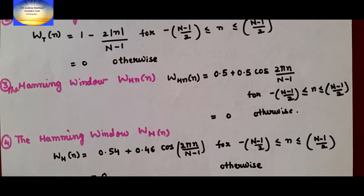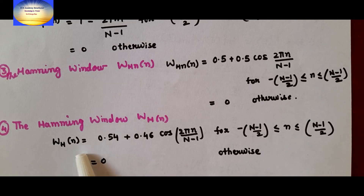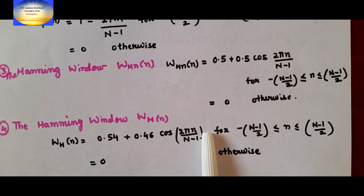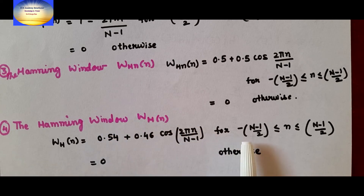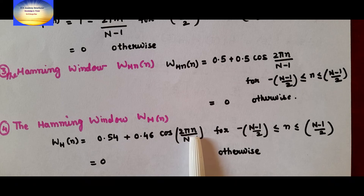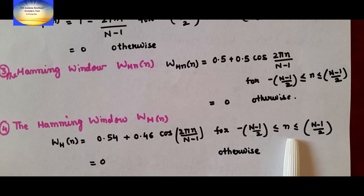The Hamming window W_H(n): W_H(n) = 0.54 + 0.46cos(2πn/(N-1)), for -(N-1)/2 ≤ n ≤ (N-1)/2, and 0 otherwise.